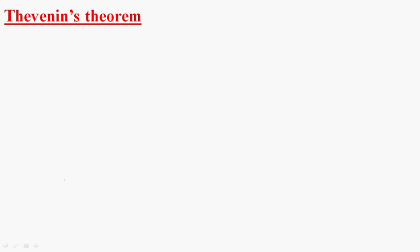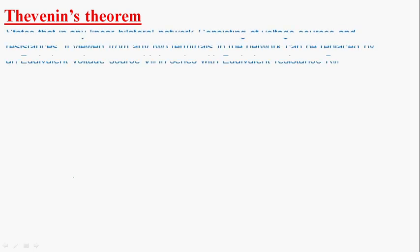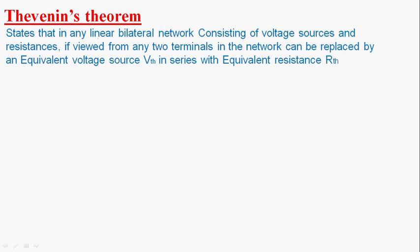Hi guys, today we are going to learn about Thevenin's theorem. Thevenin's theorem states that in any linear bilateral network consisting of voltage sources and resistances, if viewed from any two terminals in the network, it can be replaced by an equivalent voltage source VTH in series with equivalent resistance RTH.